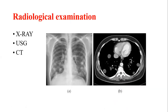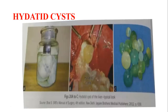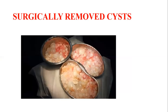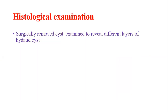Radiological examination — X-ray, ultrasonography, and CT scan — shows the hydatid cysts. These are images of liver hydatid cysts. Surgically removed cysts are examined histologically to reveal the different layers of the hydatid cyst.